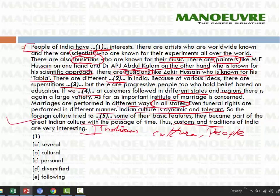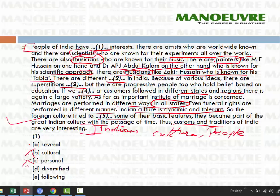Now, the first blank: 'People of India have dash interest.' Options include: several, cultural, personal, diversified, and following. Kya hum yahan several lagayein? People of India have several interest — thik hai, ho sakta hai. Cultural? After reading the entire passage, we know it's not only culture being discussed — many things are talked about. So we rule out 'cultural.' Personal? There's nothing about personal interest here — it's about everybody's profession and knowledge.